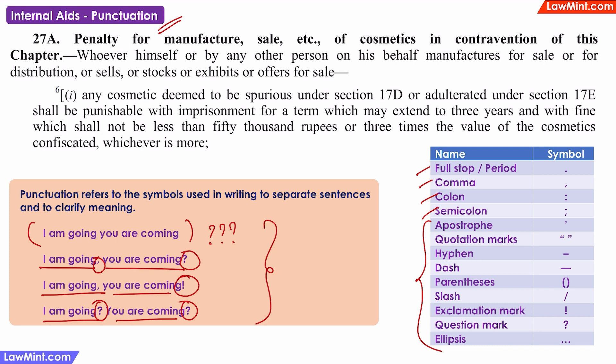In this example, you can see that there is no comma after 'or stocks' and 'or exhibits,' which means that the entire part — 'or stocks or exhibits or offers for sale' — has to be read as a single phrase. This means that simply stocking something is not punishable, or simply exhibiting it is not punishable, but stocking or exhibiting something for sale is punishable. As such, punctuation marks are used for providing clarity on the meaning and intent of sections, and punctuation marks cannot be used to arbitrarily increase or decrease the scope of a statute.